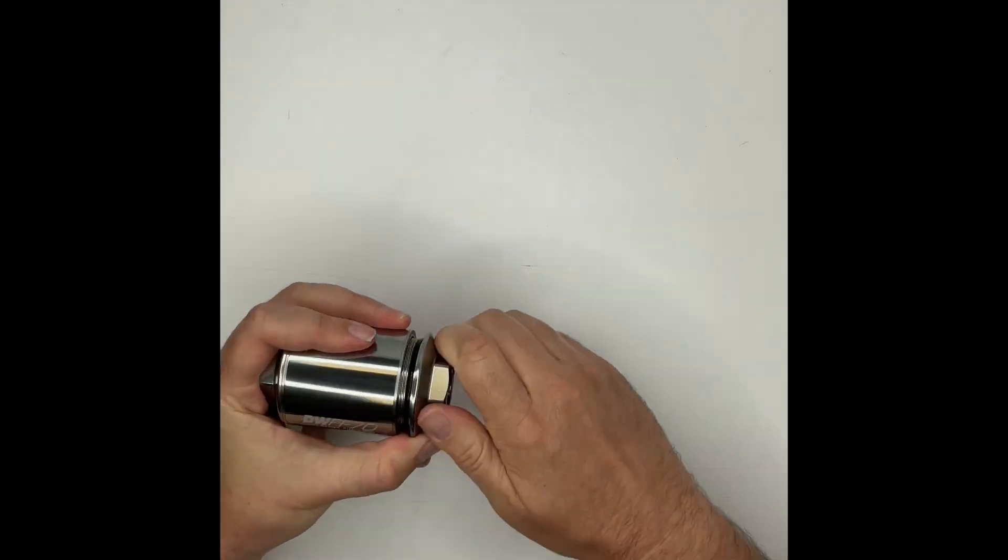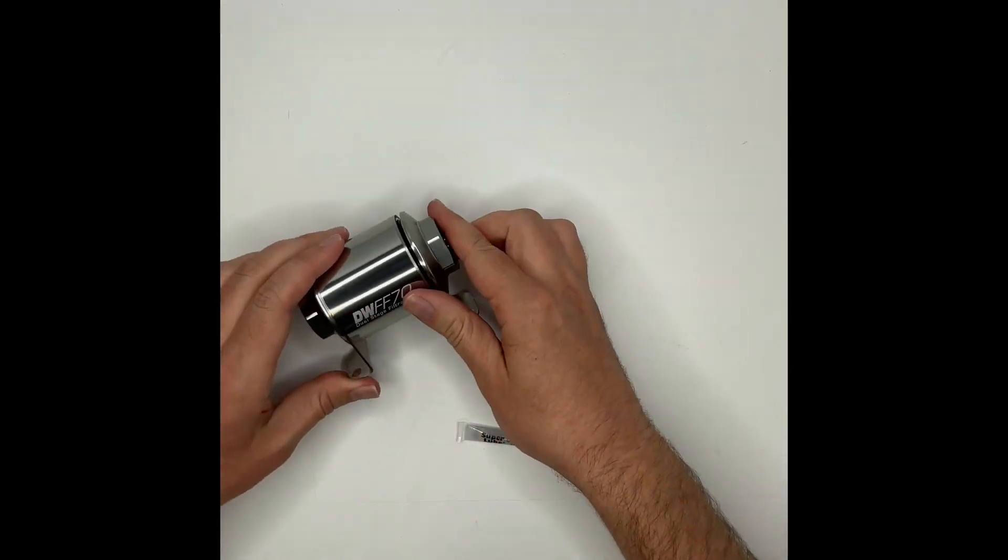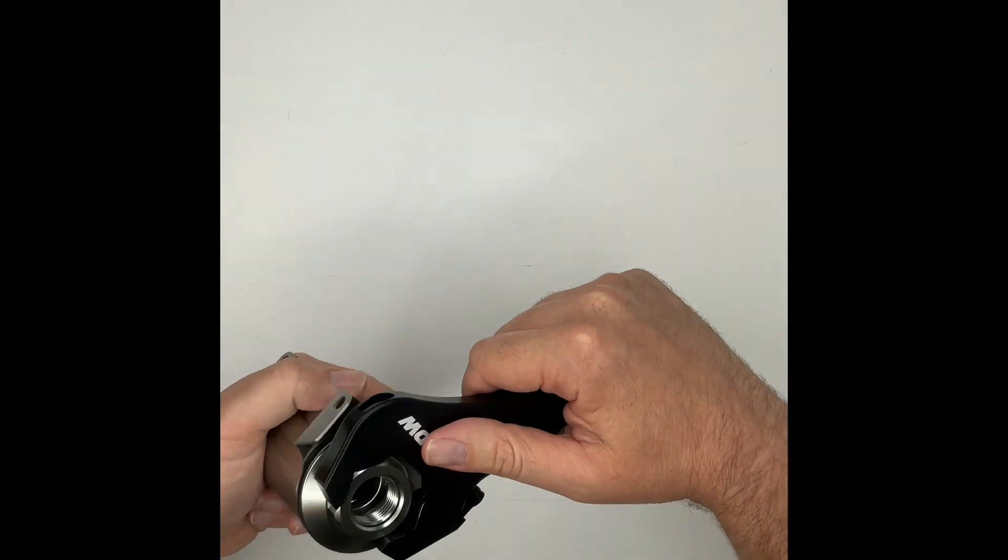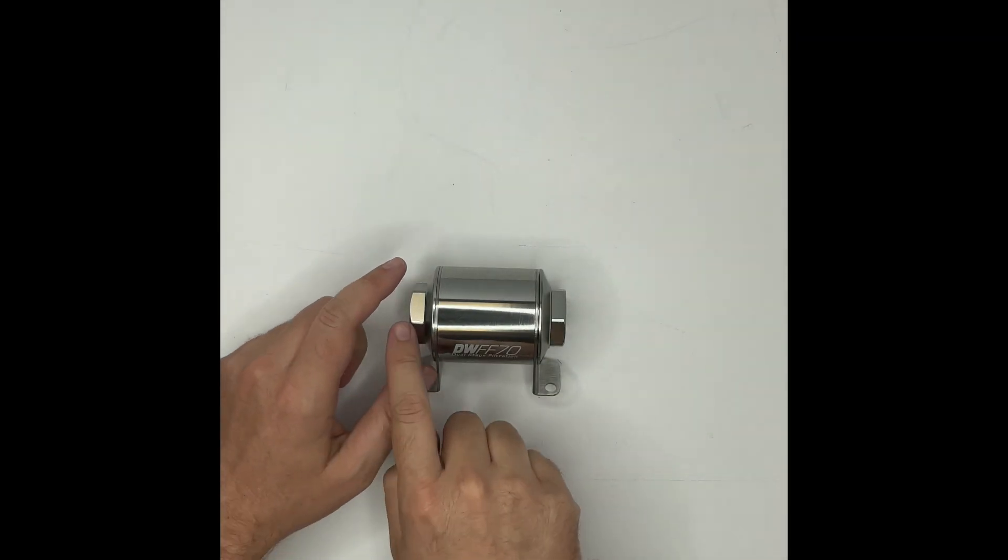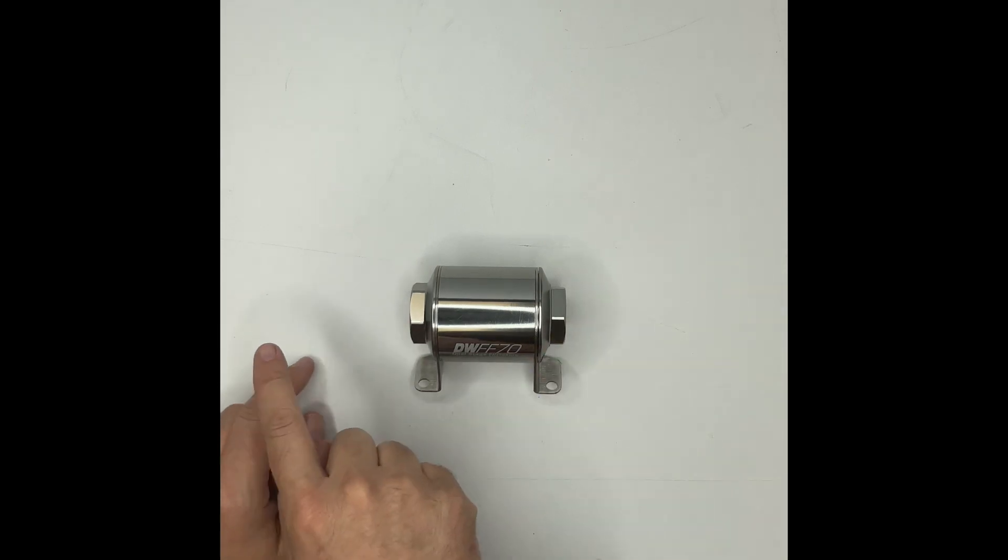After assembly, torque both caps to 15 to 20 pounds. Don't over tighten as this could cause leaks. It's important to note that the way that we have assembled this filter is so that the fuel will flow from the left to the right. It can be assembled in either direction.